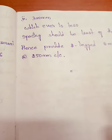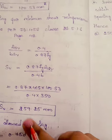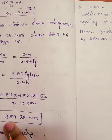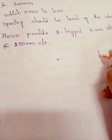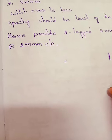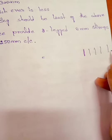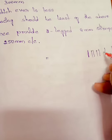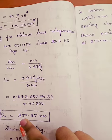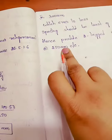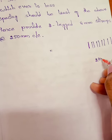Whenever you are talking about spacings, you should take it to the nearest lower value. If it is 259.25, we take it as 250. If it is 399, you take it as 390. If we increase the spacing beyond the calculated value, the number of stirrups decreases, reducing the resisting power, so the beam may not be safe.